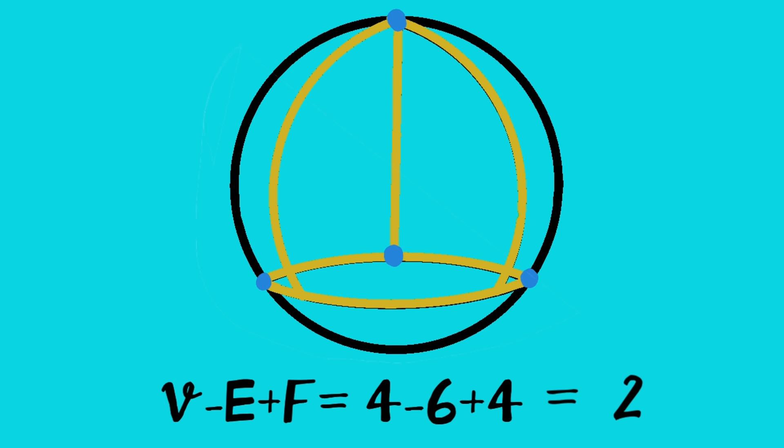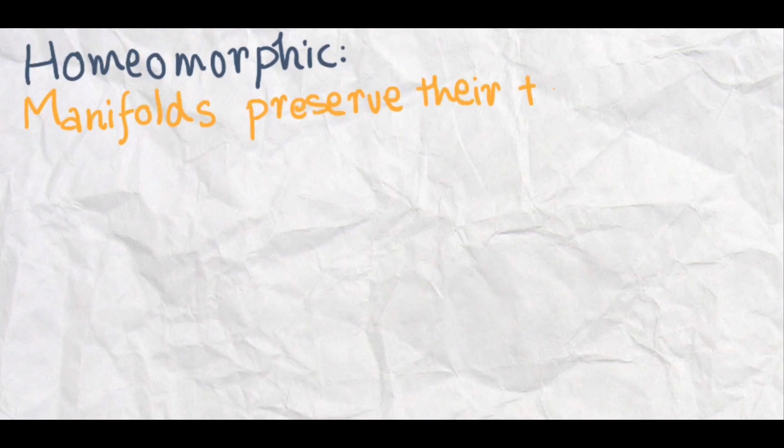The value of chi would be two. This would remain the same regardless of the way we calculate it. It is topologically equivalent to a cube. Hence, the sphere and the cube are homeomorphic.